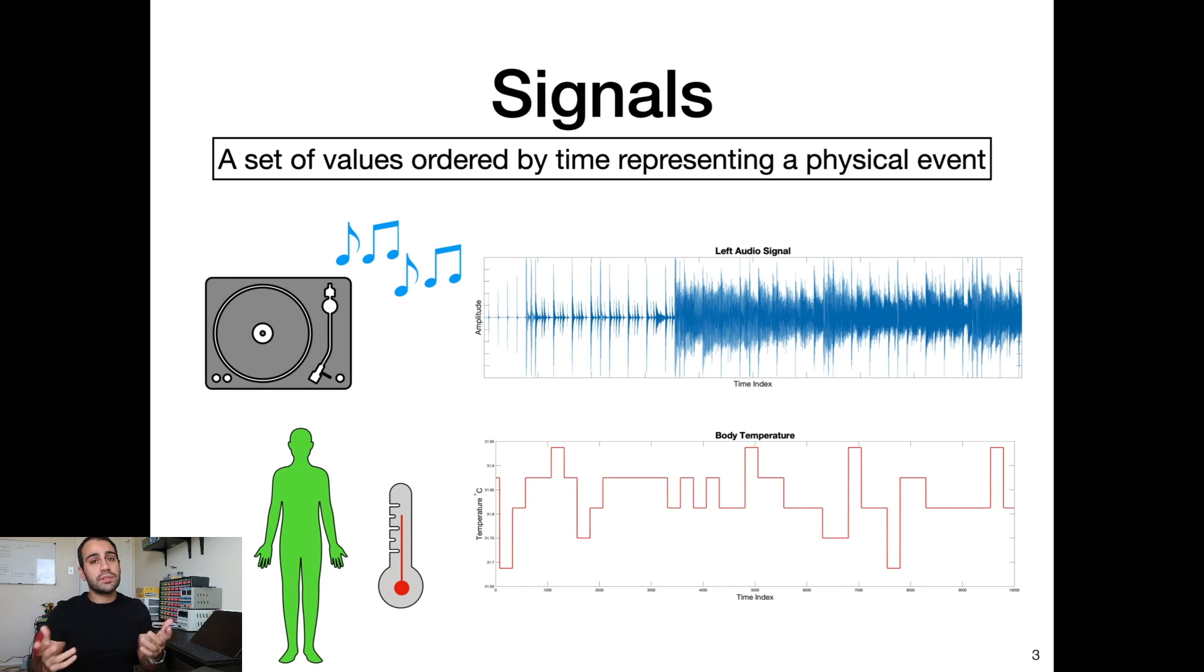So a signal is a specific kind of time series. The only difference here is a signal typically represents a physical event. So for example, you can be listening to your favorite record, that could be represented as an audio signal. So you have this time oscillating amplitude, or a lot of times it's going to be a voltage, or you can have a biometric signal. So this is something I deal with in my research. Here we have the surface body temperature plotted over time. So time series signals, very common. Everyone's probably really familiar with them. This is just terminology.